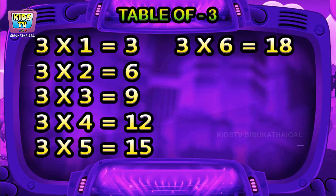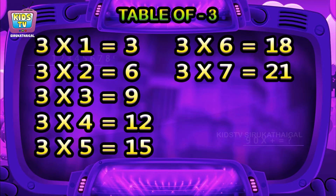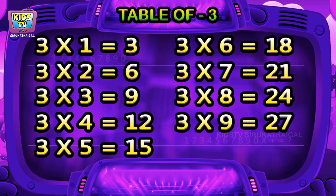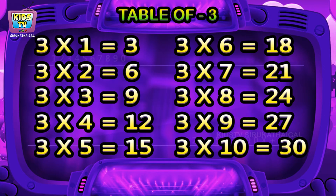Three five is fifteen, three six is eighteen, three seven is twenty one, three eight is twenty four, three nine is twenty seven, three tens is thirty.